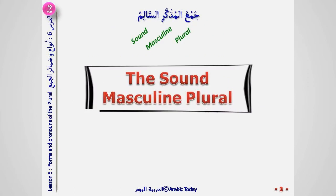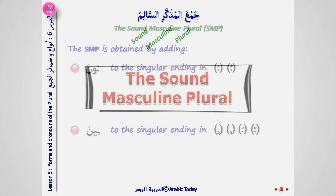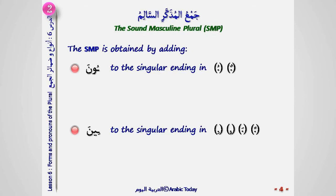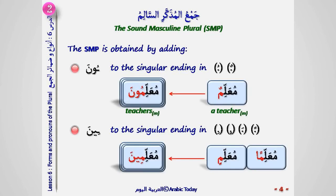جمع المذكر السالم — the sound masculine plural. It is obtained by adding the suffix ون to the singular ending in ضمة or تنوين ضمة, or the suffix ين to the singular ending in كسرة, تنوين كسرة, فتحة, or تنوين فتحة. Example: معلمون / معلمين.